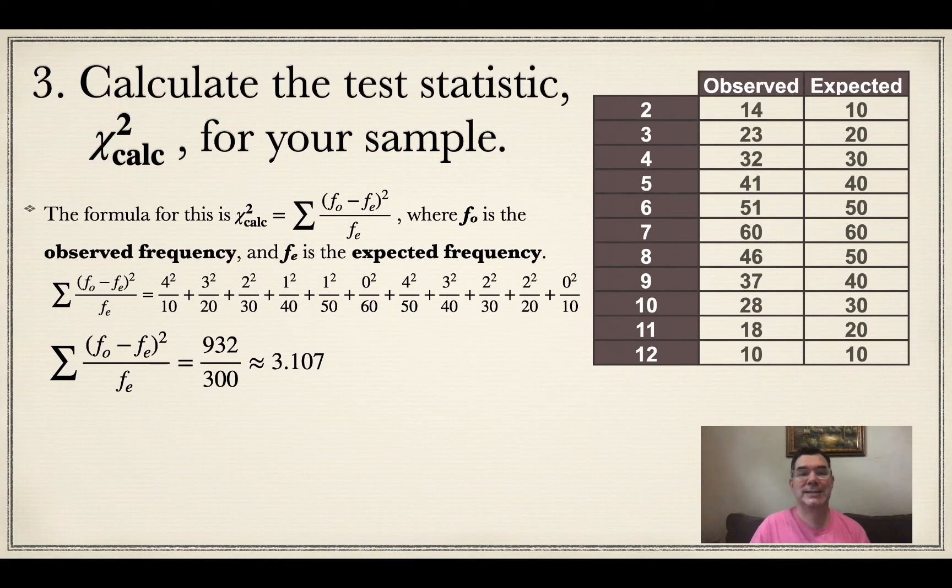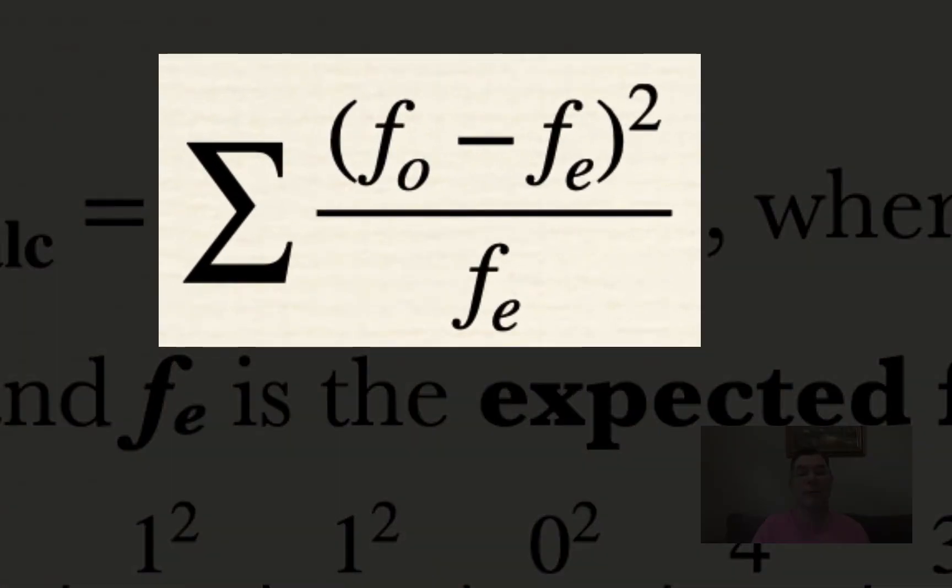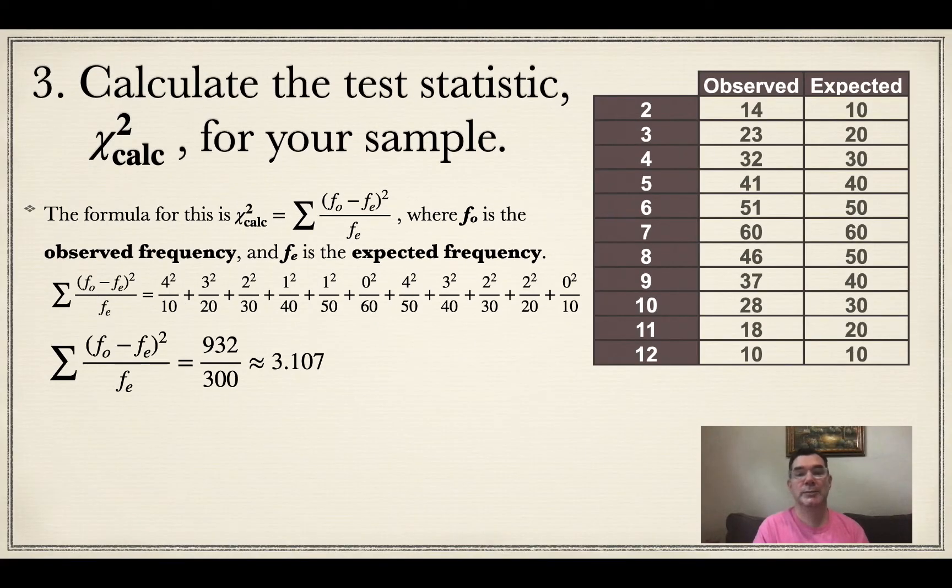So now I calculate the test statistic for the sample. So there's the formula for it. It is the sum of all of the differences between the observed frequency and the expected frequency squared over the observed frequency. So if you look at 2, for example, rolling a 2, the observed frequency was 14 and the expected was 10. That's a difference of 4. So for the first fraction, I have 4 squared out of 10.